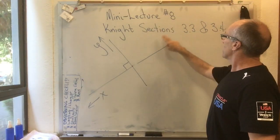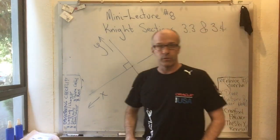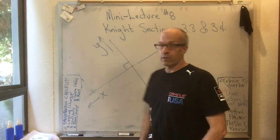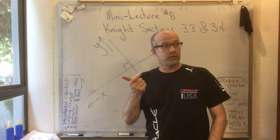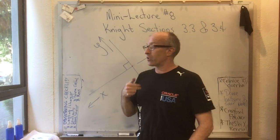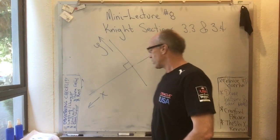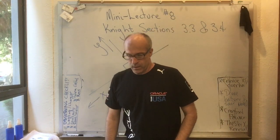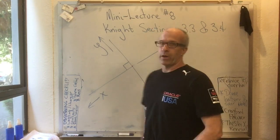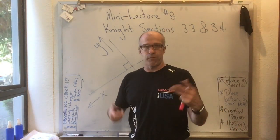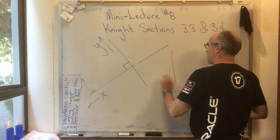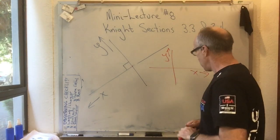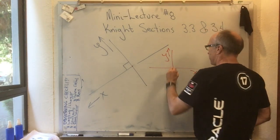This is mini lecture number eight covering Knight sections 3.3 and 3.4. You've already covered 3.1 and 3.2 — we did that the first week of class. That was vector addition, vector subtraction, and vector multiplication, done graphically. At this point you should know how to compute a plus b, a minus b, and a minus 2b. A common setup has the x-axis to the right and the y-axis up.